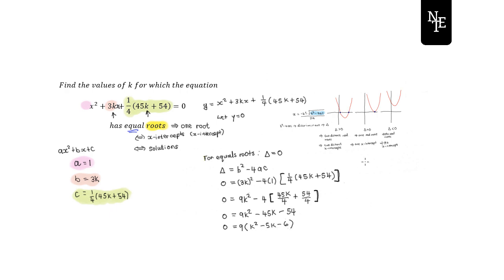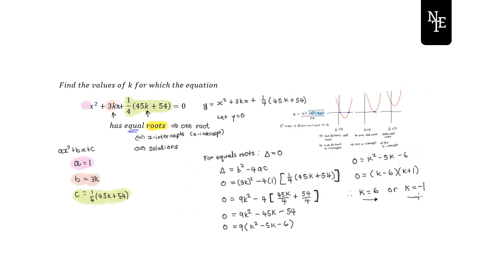Dividing both sides by 9 gives 0 = k² − 5k − 6. Factorizing into two brackets: (k − 6)(k + 1), since k × k = k², and the cross terms give −6k + k = −5k, and −6 × 1 = −6. Therefore k = 6 or k = −1 will give a quadratic with only one x-intercept.